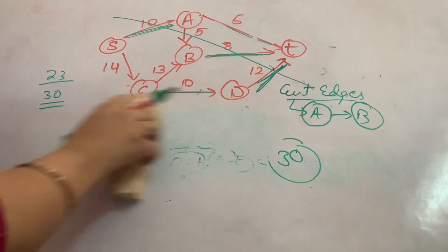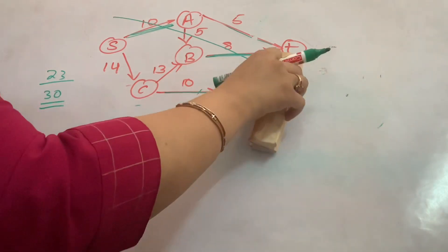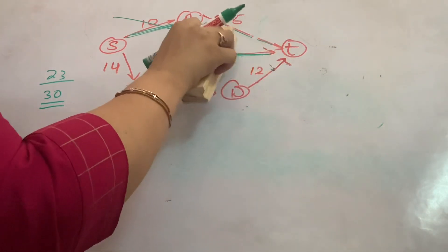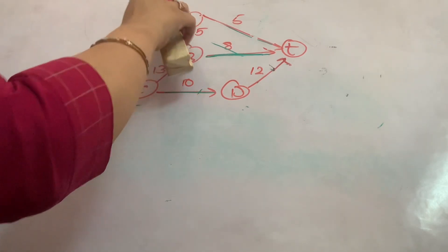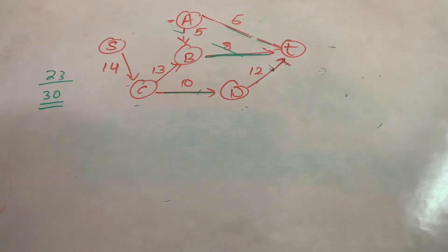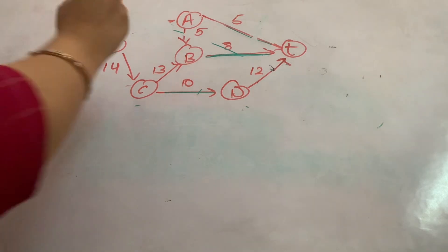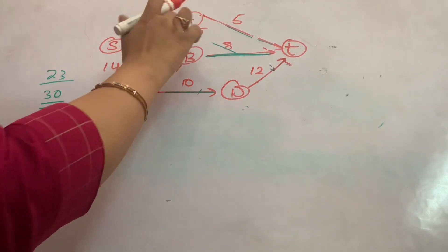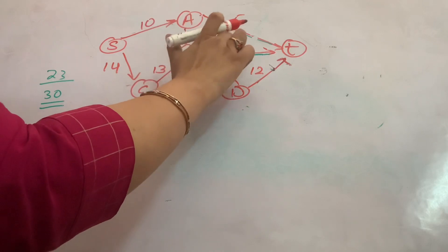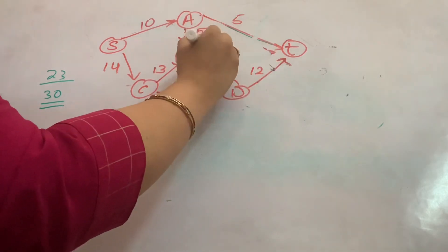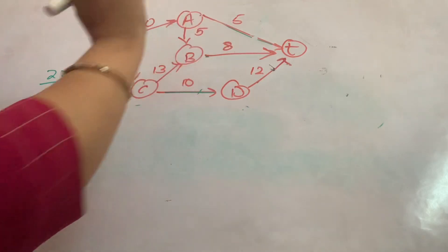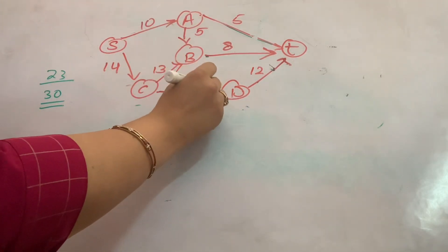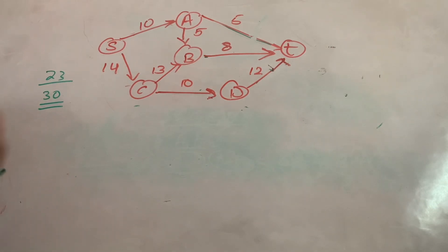The min-cut max-flow theorem states that if I find the maximum flow in a graph, then in the residual network — after removing edges with zero residual capacity — I can find the minimum cut. Let us see how to do that by applying the Ford-Fulkerson algorithm.